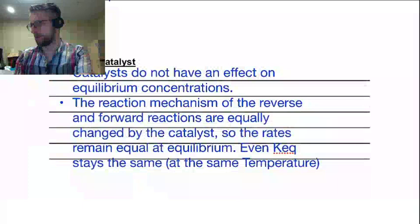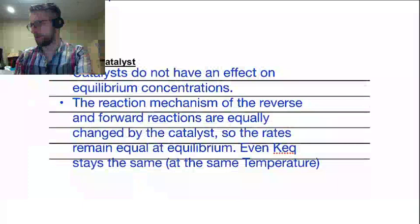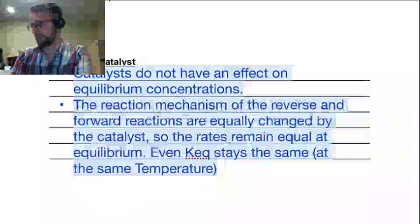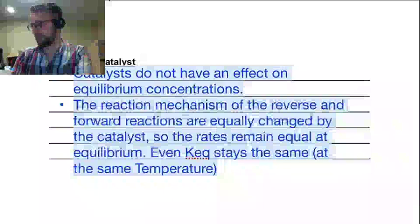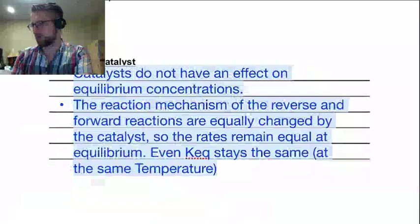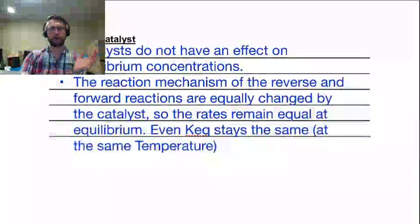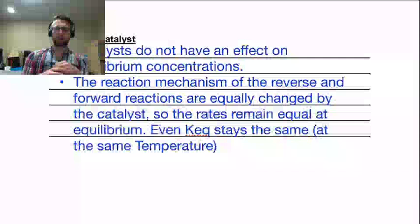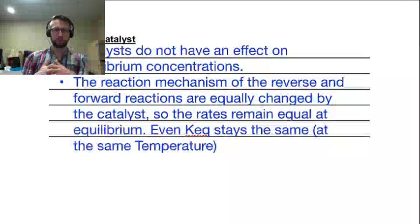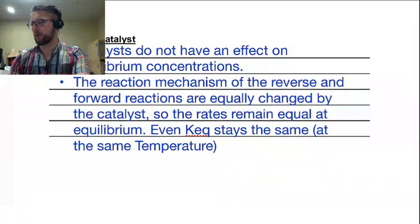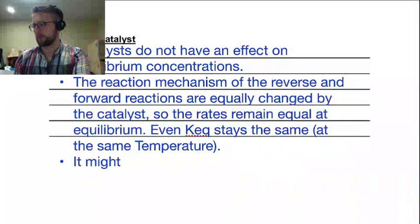To me this one always sits there — it feels almost chemically wrong, but I have not yet found anybody who says otherwise. It's a little strange, but it does make sense when you think about it: the forward and the reverse reaction are equally changed by the catalyst. This catalyst gives an equally good route for going forward or backwards. So when you add the catalyst, you don't change the concentrations — you just change how quickly concentrations can be reached.